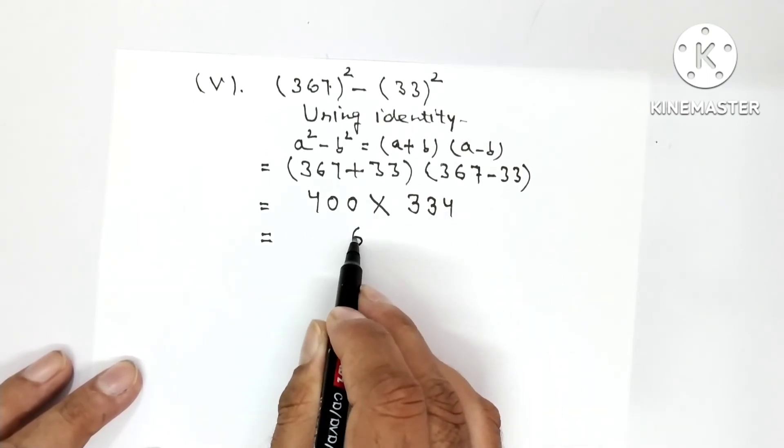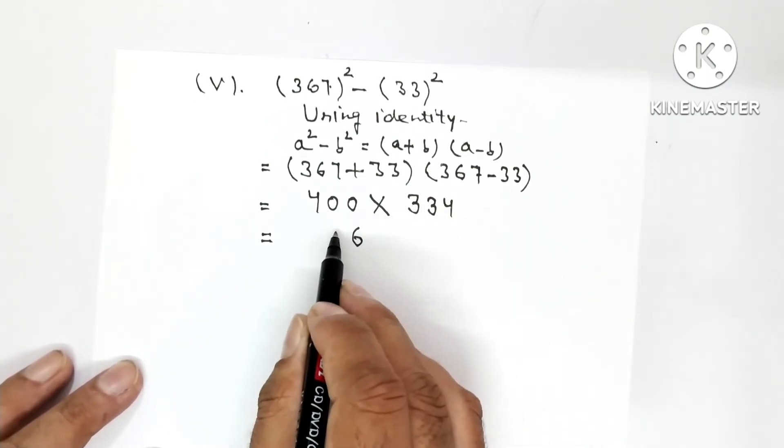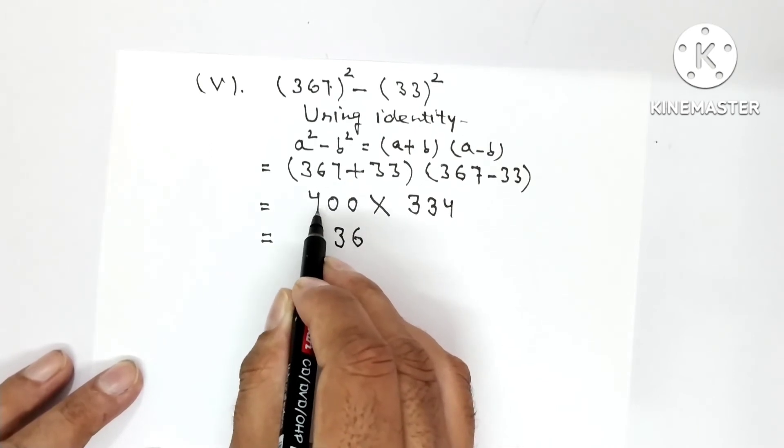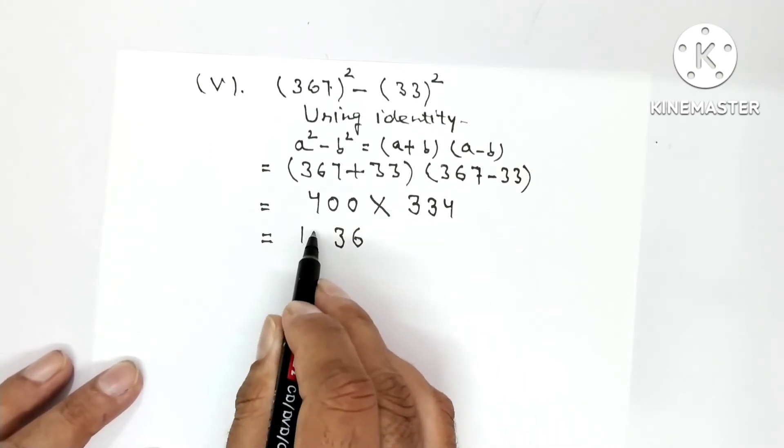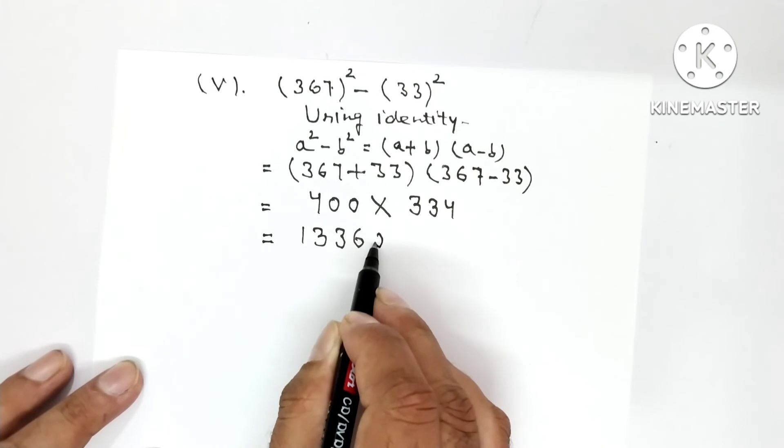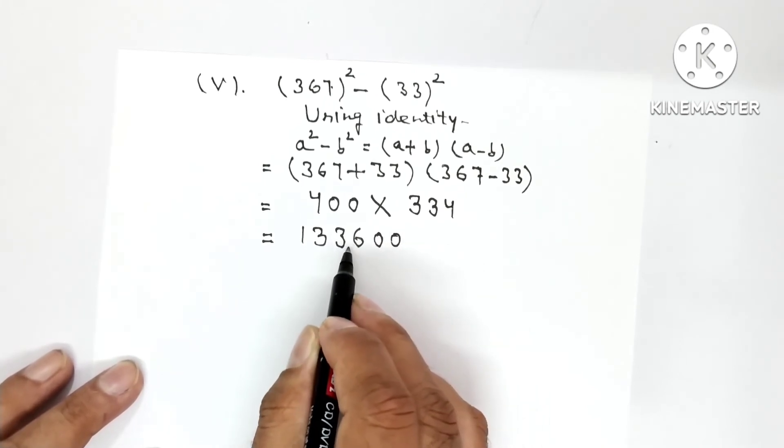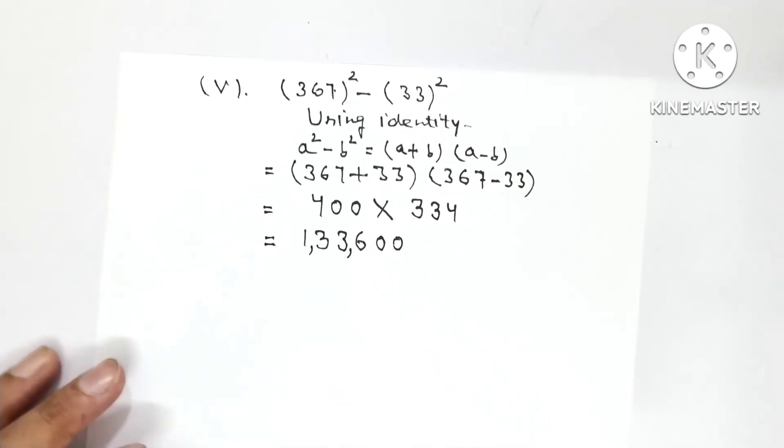Multiplied by 7 minus 3 is 4, 6 minus 3 is 3 and this is 3. Now 334 multiplied by 4. 4, 4s are 16. 4, 3s are 12 and 1, 13. 1 carry. 4, 3s are 12 and 1, 13. And after that 2 zeros. So the answer is 1,33,600.